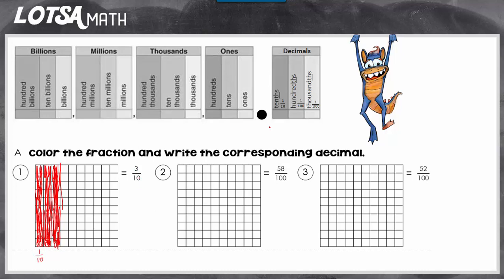And so three tenths, the tenths is always the first spot after the decimal. So three tenths would go there. So to write it as a decimal, you can't just write a three, because then it looks just like the number three. You have to put the decimal first to show that it's three tenths.